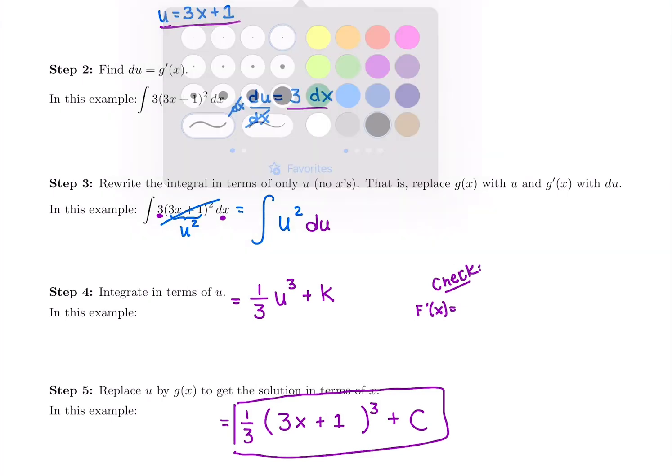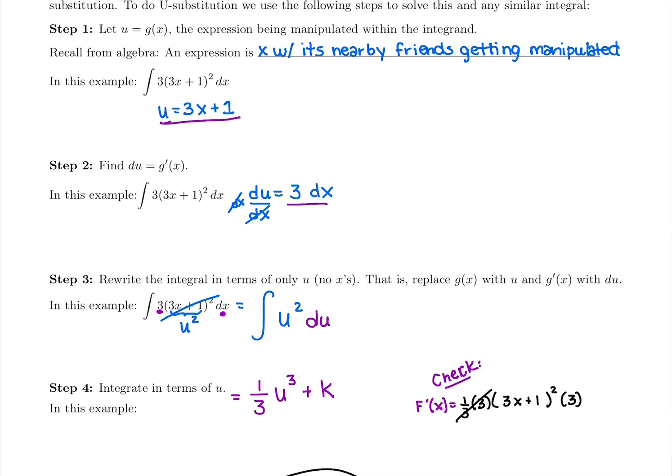I'm going to check this real quick just because that's our first one. I'm going to bring down the power using the chain rule, 1/3 times 3 out front, keep the original inside and raise it to the 2, so (3x + 1)², and then the derivative of the inside is 3. So applying our chain rule, 1/3 of 3, those just cancel out, and we get (3x + 1)² times 3, which is exactly what we started with.